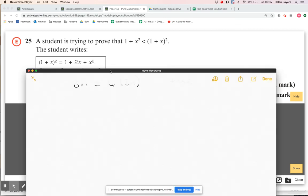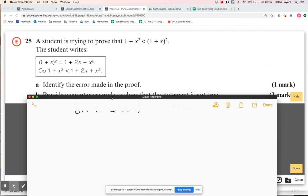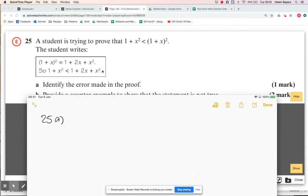First thing we'll do is check their algebra. Have they squared those brackets out correctly? Yeah, I think they have. They've got one squared, then one times x plus another one times x and the x times x. You could double check that, but actually that's fine.